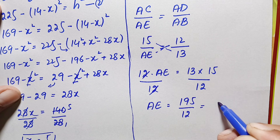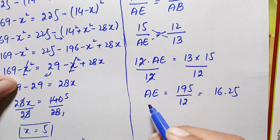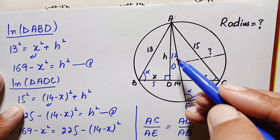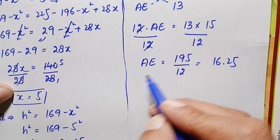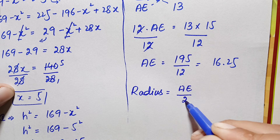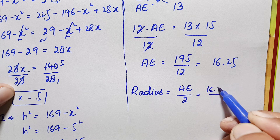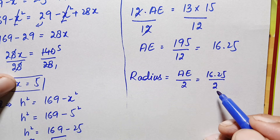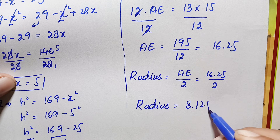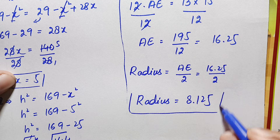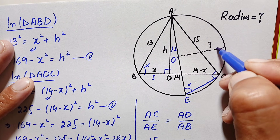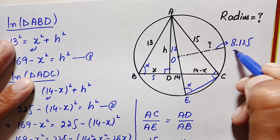195 divided by 12 gives us 16.25. So AE, the diameter of this circle, is 16.25 units. Our target is to find the radius, which is half of the diameter. Therefore, the radius equals AE divided by 2, which is 16.25 divided by 2, giving us 8.125 units. So finally, the radius of this circle is 8.125 units — that is our final answer.